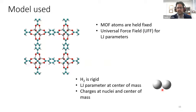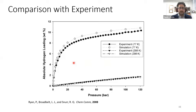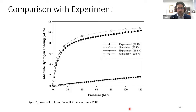We treat hydrogen as rigid, with a Lennard-Jones parameter at the center of mass and charges at the nuclei and center of mass to capture the hydrogen quadrupole. Simulations have been compared to experiments for hydrogen adsorption isotherms — the black lines are experiments and the empty symbols are simulations. We observe great agreement. Each symbol represents a separate GCMC simulation where we fix the chemical potential, volume, and temperature.